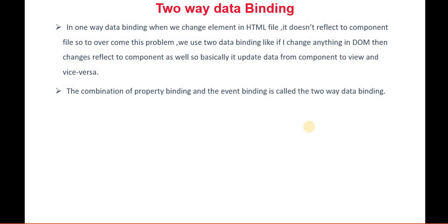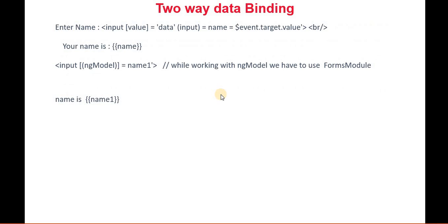Now if we talk about two-way data binding, it is basically a combination of the property binding and the event binding. We can also achieve two-way data binding using the ngModel. This is an example using ngModel. If we want to use ngModel, we have to define the forms module in the app.module.ts file. So there are two ways we can achieve two-way data binding — one is the combination of property binding and event binding, and another is using ngModel.